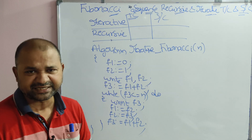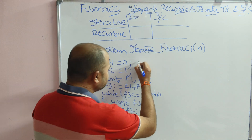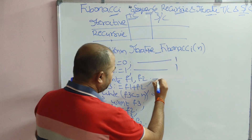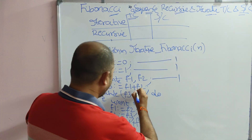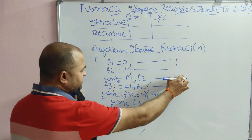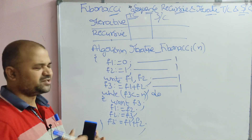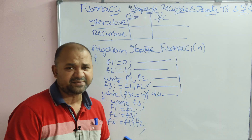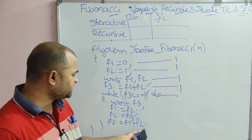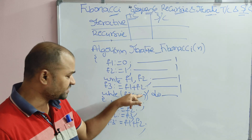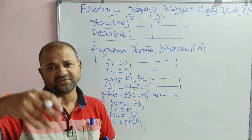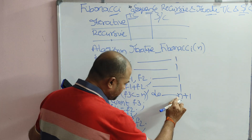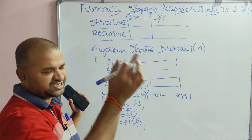Now we need to find the time complexity. For an assignment statement, the step count or frequency count is 1. F1 equals 0 is 1, F2 equals 1 is 1. The write statement printing two values can be counted as 2. The while condition will be evaluated n plus 1 times — n times for the true condition and one extra time for the false condition check.